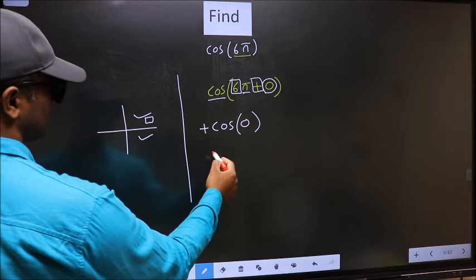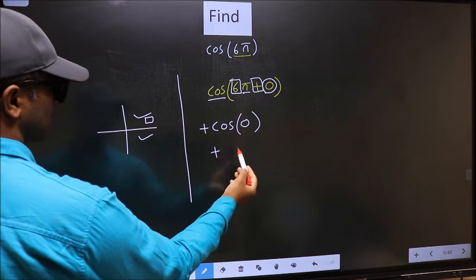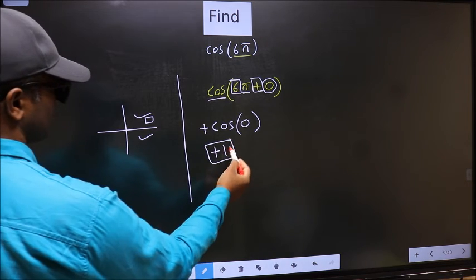So you should put plus. Therefore, plus cos 0 equals 1. This is our answer.